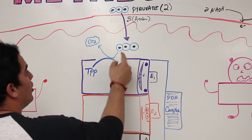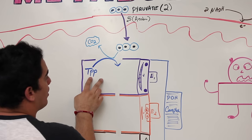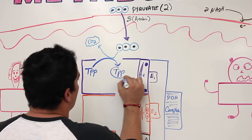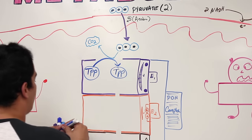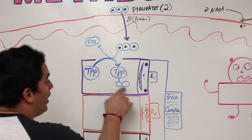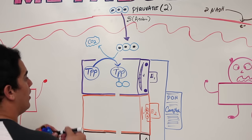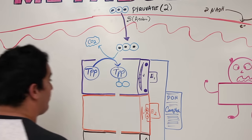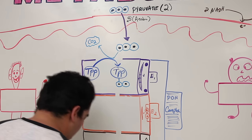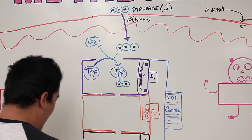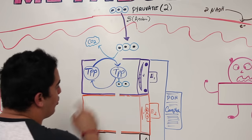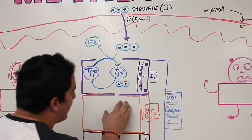The remaining two carbons become an acetyl group and are bound onto the thiamine pyrophosphate. Then thiamine passes that acetyl group along — it gives the acetyl group away to the next enzyme complex.